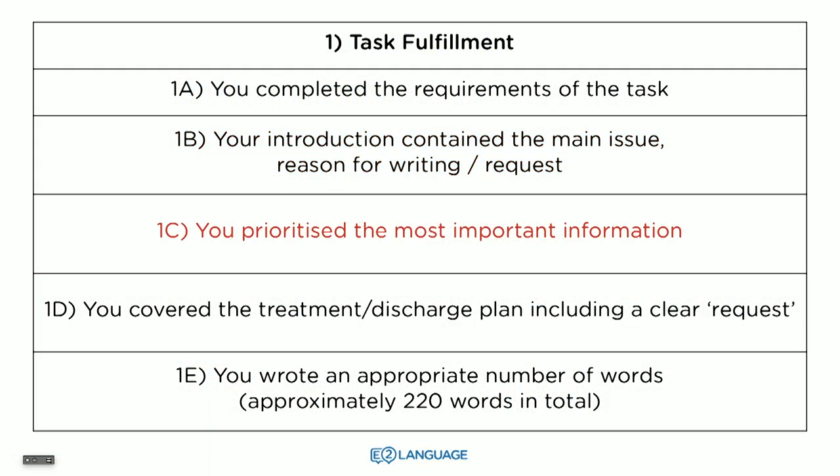Criterion 1C is hugely important: you need to prioritize the most important information. You've got all of these case notes, and some of them are relevant to the recipient, and the ones that are relevant will have a priority of importance. Some of them will be really important and the reader needs to see them straight away — they should be at the top of the letter, right? Maybe it's the main medical issue. What you don't want to do is bury the important priority in the middle or bottom of your letter. If it's important, bring it to the top — you need to prioritize it. This is critical.